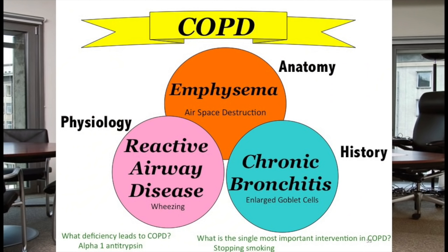Emphysema has three pathophysiological components: an anatomy problem — dead airspace; a physiology problem — reactive airway disease, the asthma component; and a histological problem — chronic bronchitis with enlarged goblet cells.